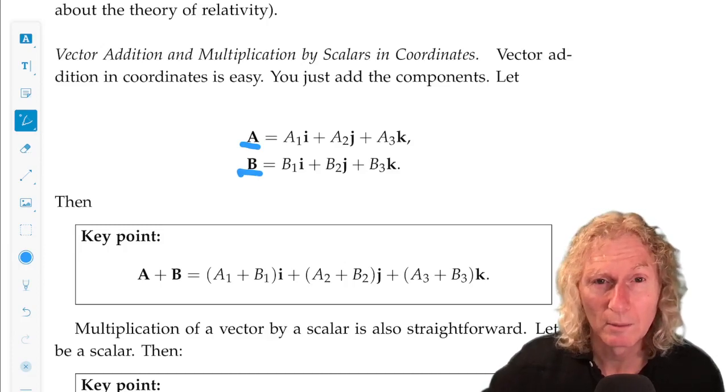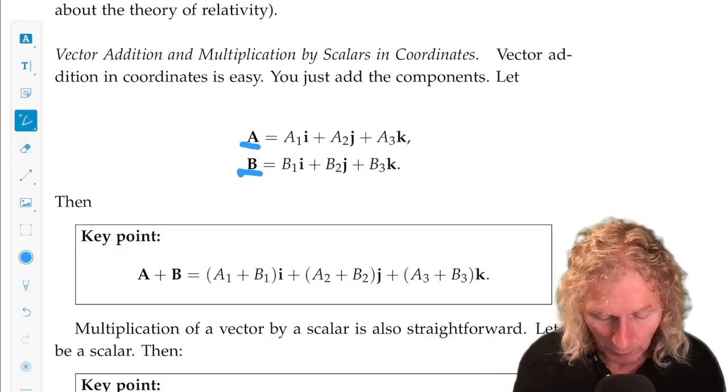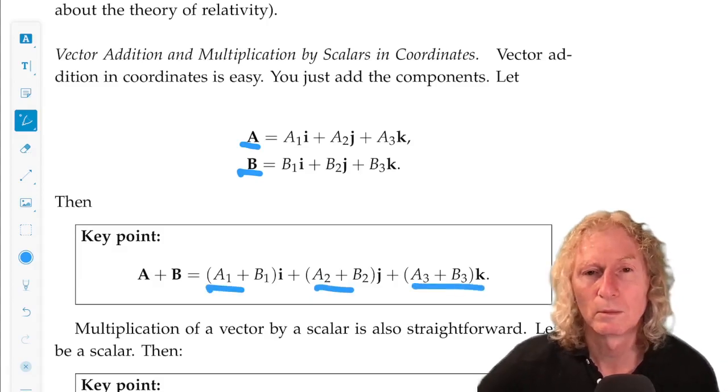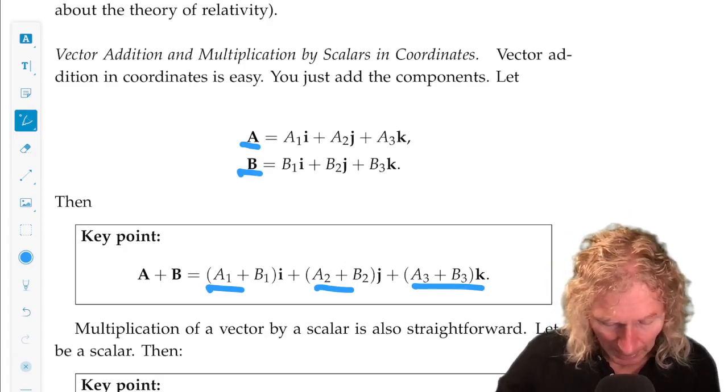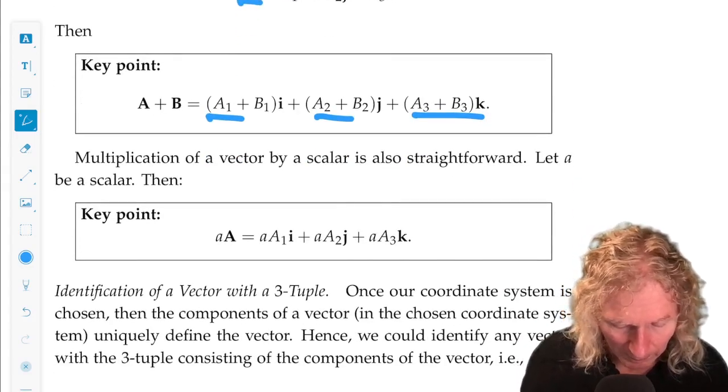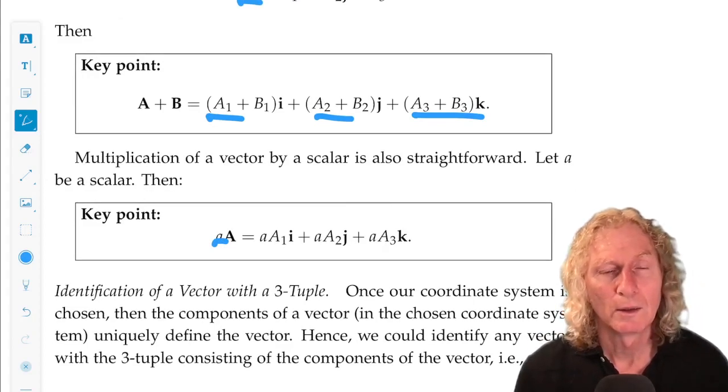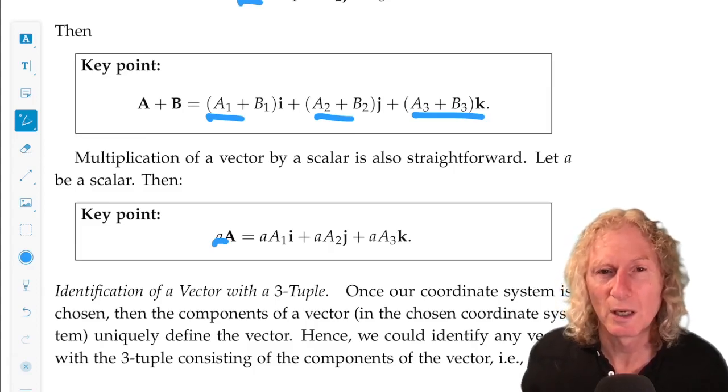So, the sum of a and b is just the sum of the individual components for each respective direction multiplied by the direction. Easy. And if we have a scalar times a vector, when the vector is represented in components, we just multiply each component by the scalar.